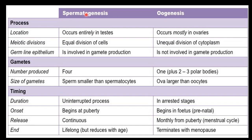Spermatogenesis ends lifelong — from puberty to senescence — but reduces with age. Oogenesis, however, terminates with menopause. These are all the differences between oogenesis and spermatogenesis. Thank you, students; we will meet again in the next discussion.